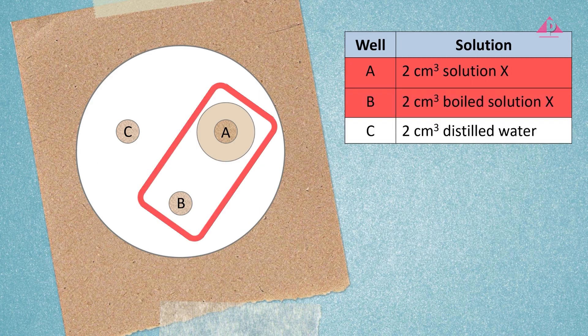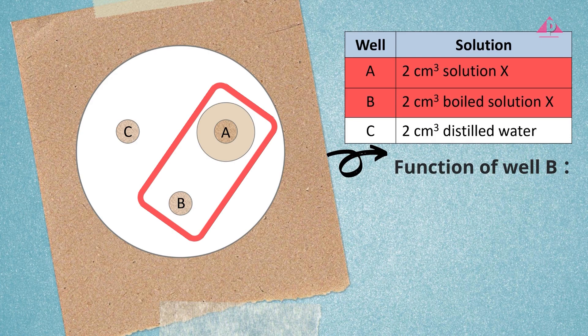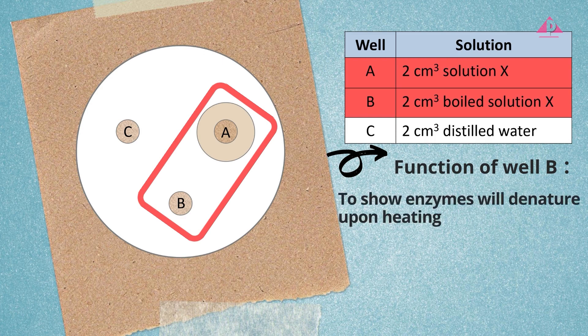What is the purpose of well B? The Solution X in well B had been boiled, while the Solution X in well A was not. The results show that the boiled Solution X did not cause the formation of a clear zone. Students may think the substance that breaks down milk proteins must be enzymes, because enzymes denature and lose their function upon heating. They may deduce that the function of well B is to show that enzymes will denature upon heating — but is this really the function of well B in this experiment?